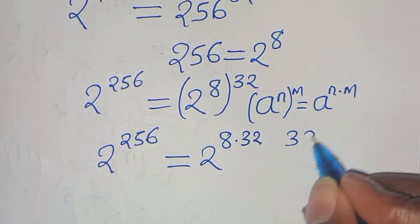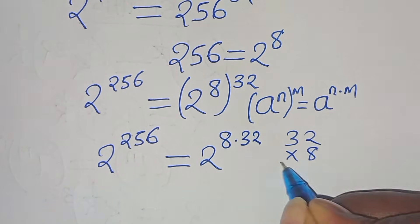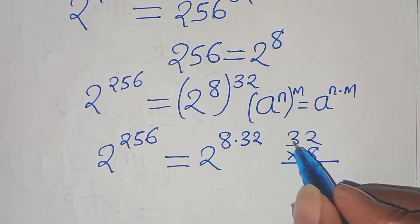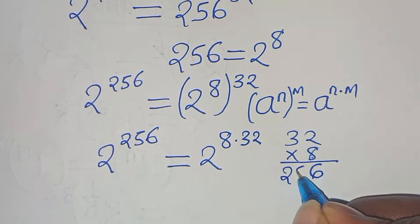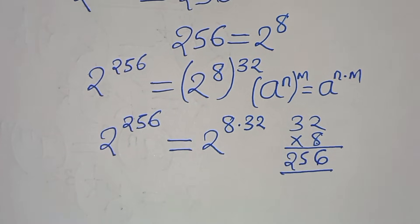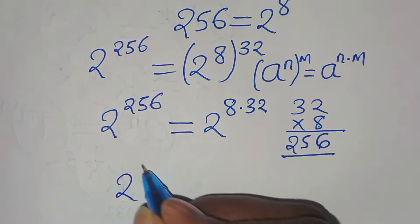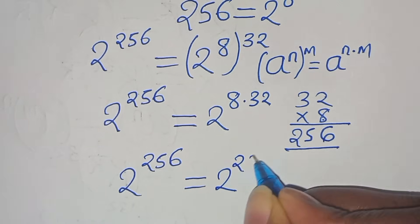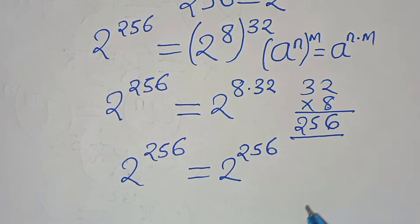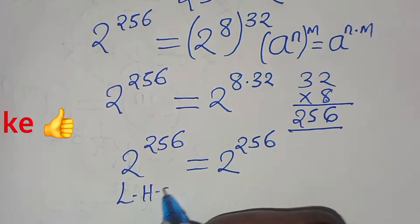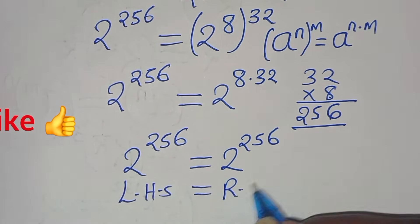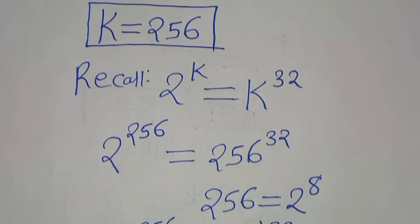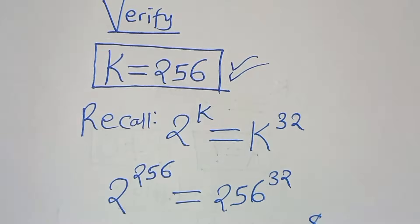Computing 8 times 32: 8 times 2 is 16, 8 times 3 is 24, giving 8 times 32 equals 256. So the right side is 2 to the power of 256, which equals the left side. This affirms that the value k equals 256 satisfies the equation.